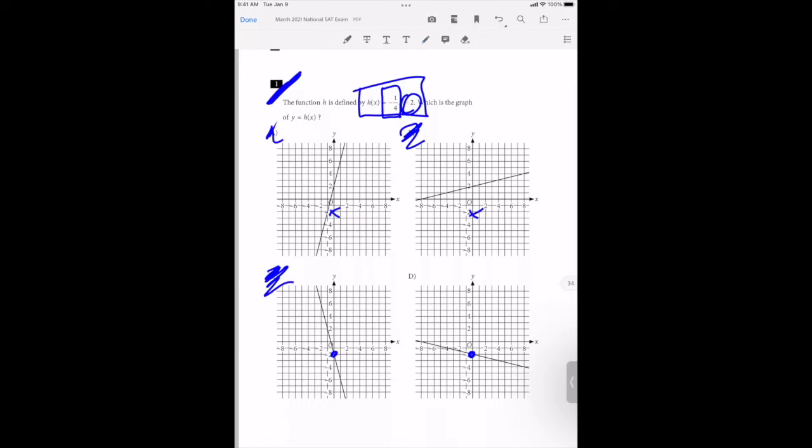Before we select it, let's double check our work by testing any coordinate point of our choosing. Let's try something like four, negative three. Does negative three equal negative one-fourth times four minus two? Well yeah, negative one-fourth times four is negative one, and that minus two is negative three.